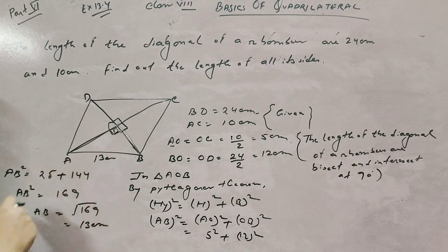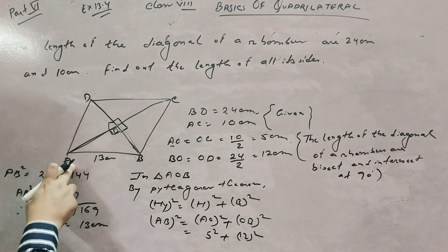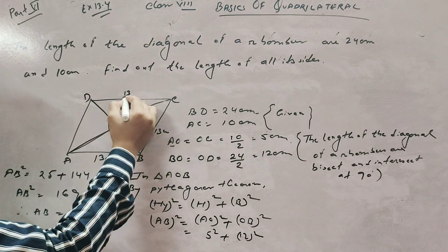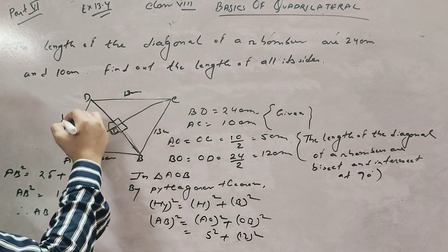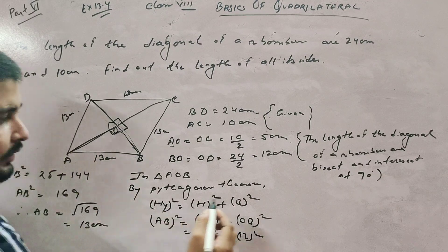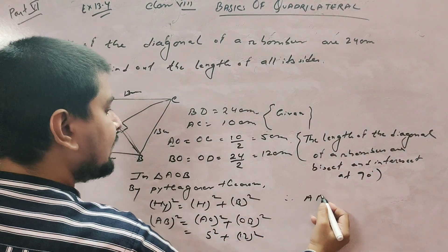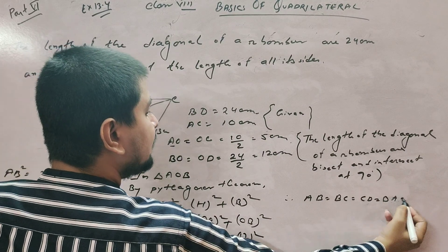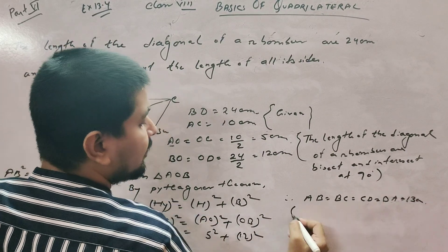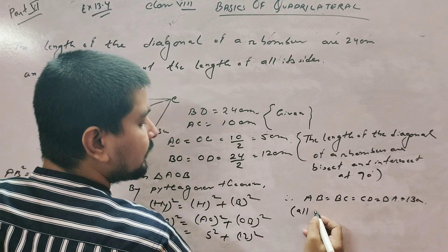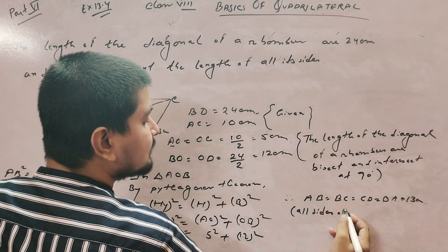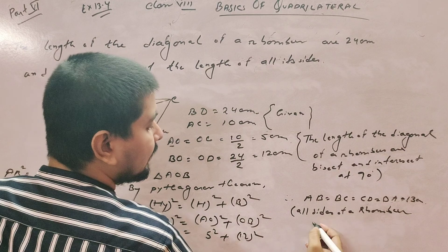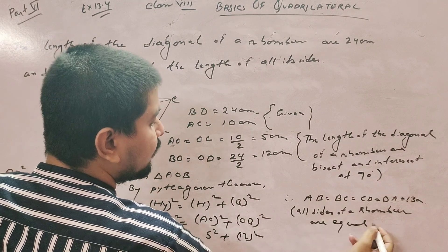If this portion is 13 centimeter, then this one is also 13, this one is also 13, and this one is also 13. Therefore AB equals BC equals CD equals DA equals 13 centimeter, because we know that all sides of a rhombus are equal.